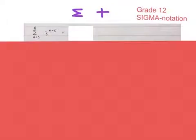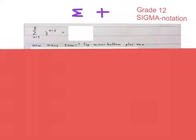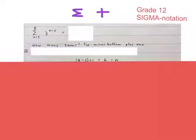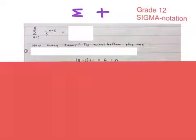The next question looks like this. First we work out how many terms: top minus bottom plus 1. That is 8 minus 3 plus 1, which gives me 6 terms in this series.